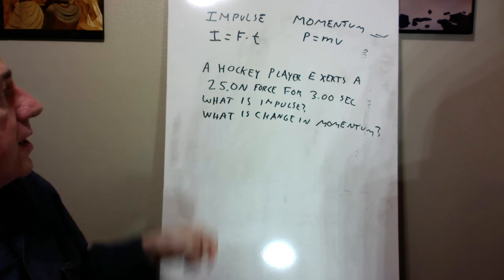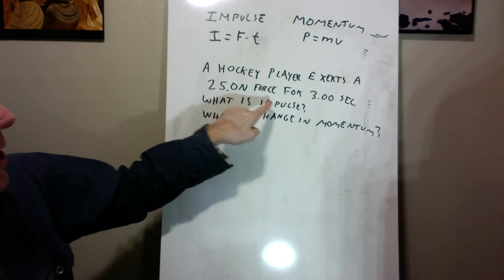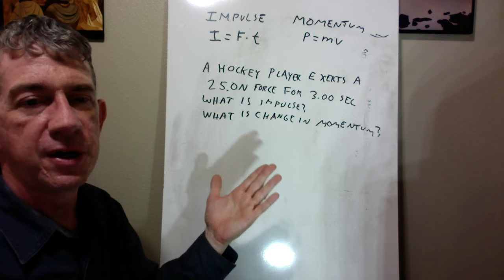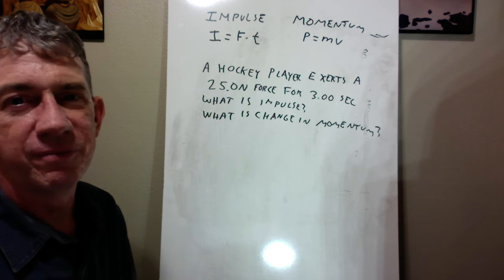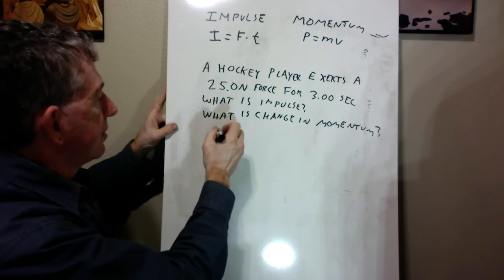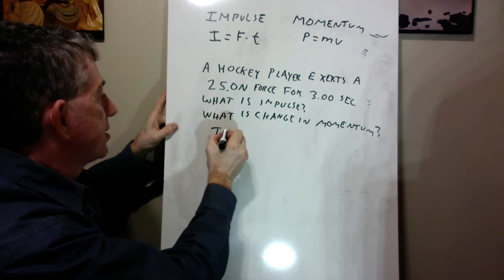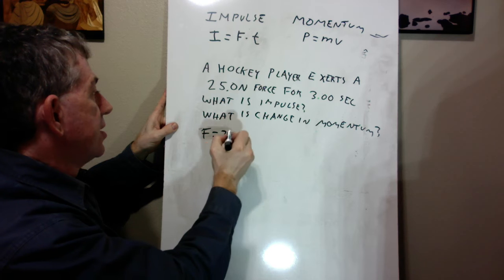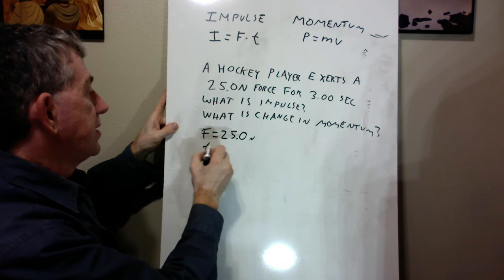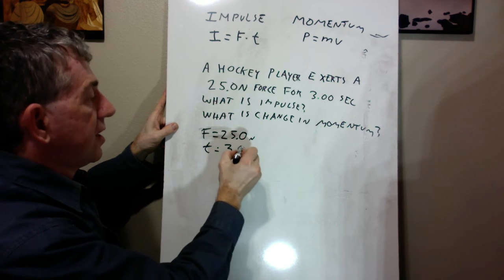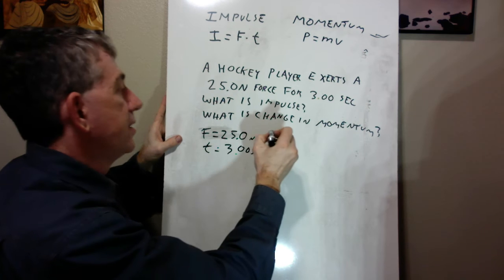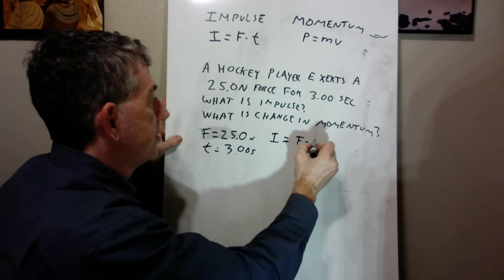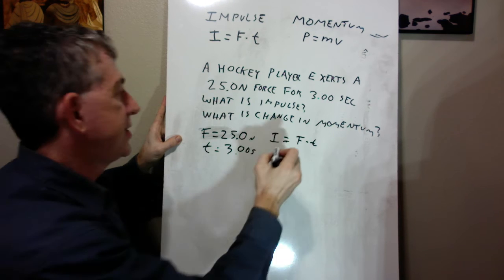So impulse and momentum, they're related in those ways. So here's a little sample problem. A hockey player exerts a 25 Newton force for three seconds. And I asked two questions. What's the impulse and what's the change in momentum? Well, the first one's easy. Impulse is, and of course our givens would be that the force is 25 Newtons and the time is three seconds.